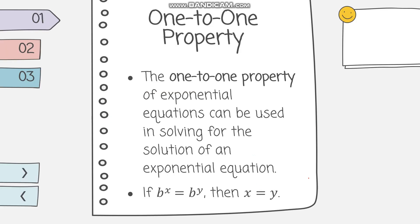To solve both types of equations we will use the one-to-one property. The one-to-one property of exponential equations states: if b raised to x equals b raised to y, then x equals y. In short, if the bases on both sides are the same, their exponents are equal as well. For example, if 2 raised to x plus 1 equals 2 raised to 3, then x plus 1 equals 3.